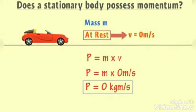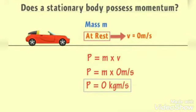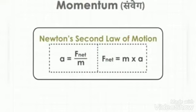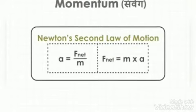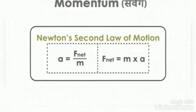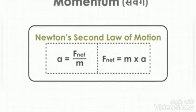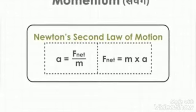When a body is stationary, the momentum is zero. The second law states that acceleration is equal to net force by mass. It depends on velocity. F net is equal to mass into acceleration. It depends on the value of velocity and mass.